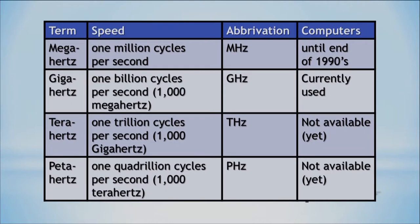One of the early terms we used was megahertz, which is what we had until the end of the 1990s — one million cycles per second. Currently we have gigahertz, which is one billion cycles per second. The next steps would be terahertz and petahertz, which aren't available yet, but maybe in the future. Who would have thought we'd be at gigahertz now, given how rapidly technology has been changing?